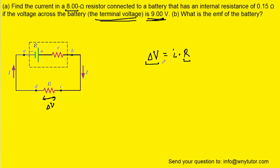So what we'll do is we'll solve this equation for the current. We'll divide both sides by uppercase R. And then we can plug in the terminal voltage of 9 volts, as well as the resistance of 8 ohms. And this is going to give us the current that flows through the resistor.